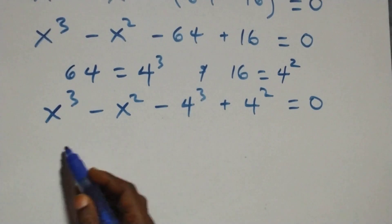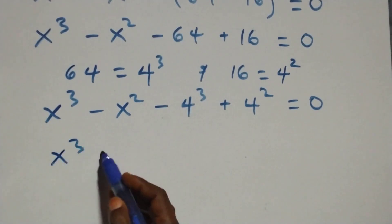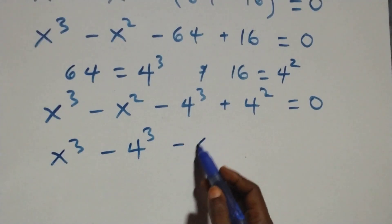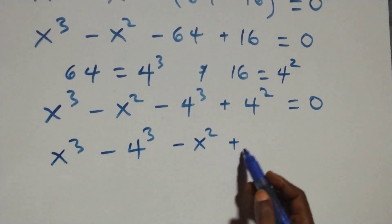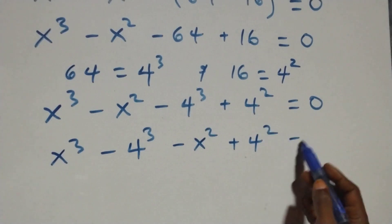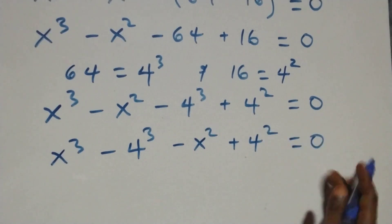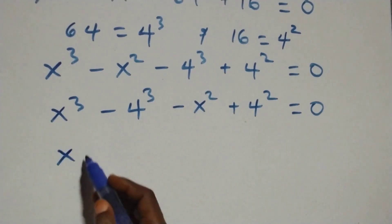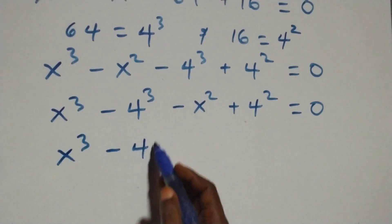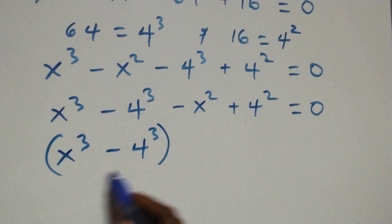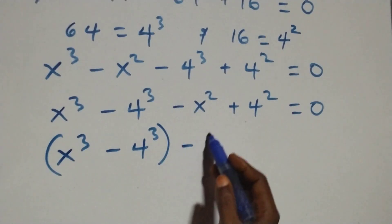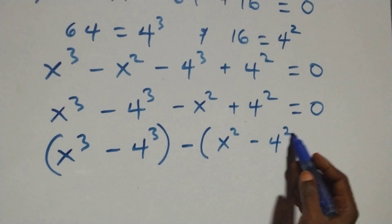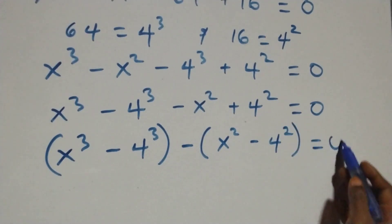We bring the power-of-3 terms together: x raised to the power 3 minus 4 raised to the power 3, then the power-of-2 terms together: minus x raised to the power 2 plus 4 raised to the power 2, equals to 0. We can write this as (x³ - 4³) minus (x² - 4²) equals to 0.